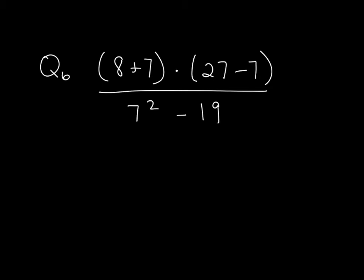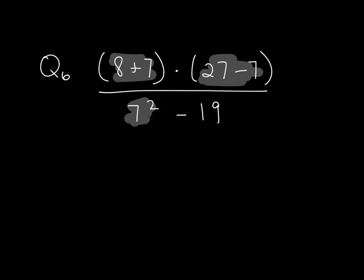So we're going to do the same thing with this one. We're going to take the numerator and denominator separately. I'm going to do the inside of this parenthesis, the inside of this parenthesis, and this first exponent, 7 squared.